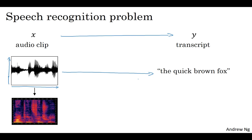A common pre-processing step for audio data is to run your raw audio clip and generate a spectrogram. This is a plot where the horizontal axis is time and the vertical axis is frequencies, and intensity of different colors shows the amount of energy - how loud is the sound at different frequencies at different times. These types of spectrograms or filter bank outputs are often commonly applied pre-processing steps before audio is passed into a learning algorithm. The human ear does a computation pretty similar to this pre-processing step.